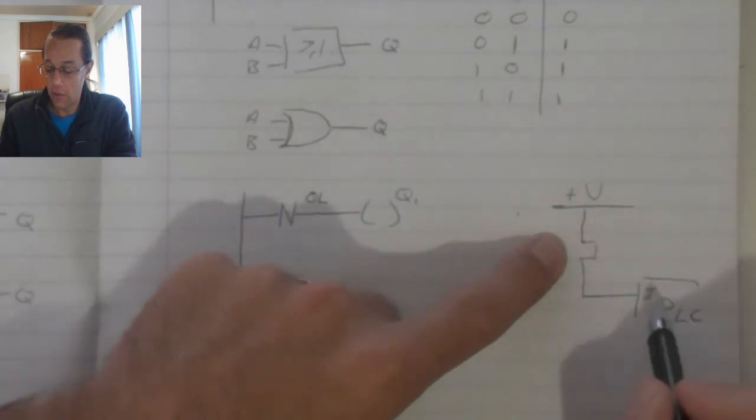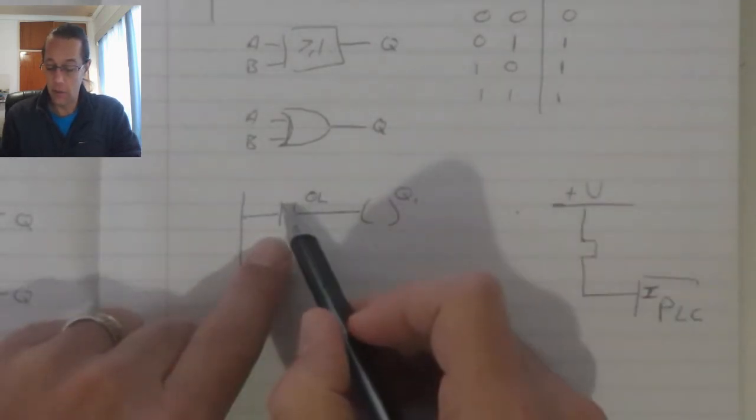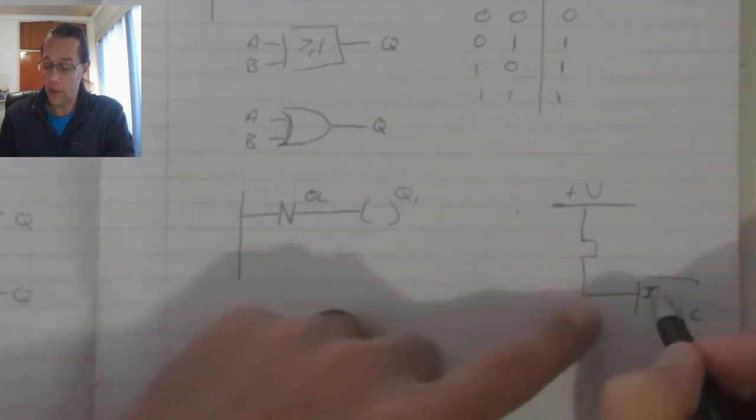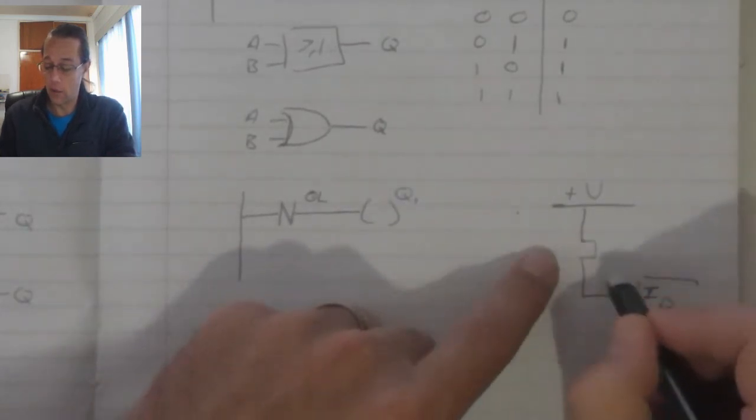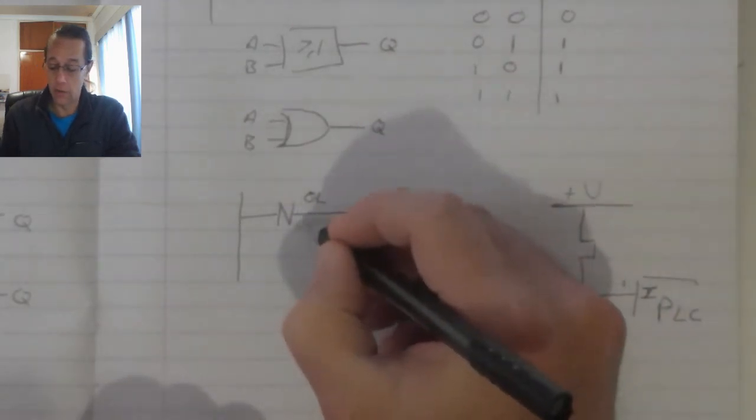So, when this is now closed, my input over here is reading a logic 1. It is ON. But the moment I do that, in my ladder diagram, what it does is it takes that logic 1 that it's reading there, and it converts it to a 0.